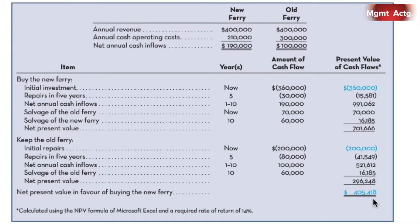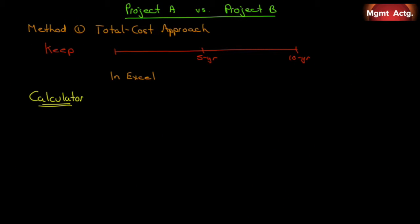Now let's see how we do that on a timeline — you'll see it's much simpler than all of those calculations. We'll look at Project A versus Project B — in this case, buy a new boat or keep the boat — using two methods: a total cost approach and an incremental cost approach. Once we do it on the timeline, you'll see the incremental cost approach is super easy. We have a 10-year story with years laid out for all 10.